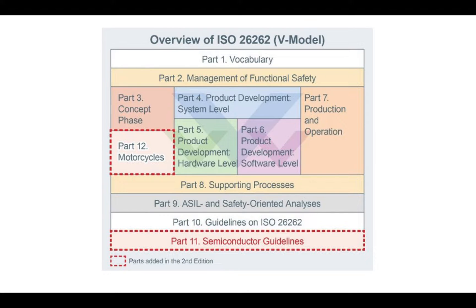I shall explain how you can safeguard the safety of your automotive products by using these 12 parts together. Part 1 is Vocabulary — it defines terms to achieve a common language and interpretation across all other parts. Here you will encounter terms such as hazard, risk, failures, cascading failures, common cause failures, safe state, freedom from interference, ASIL, fault tolerance time interval, fault detection time interval, fault reaction time interval, and safety assessments.